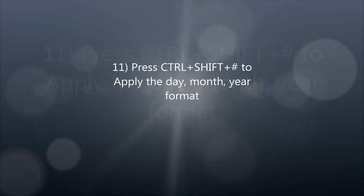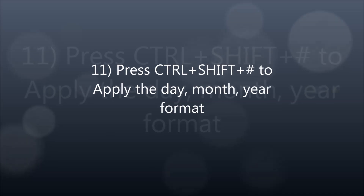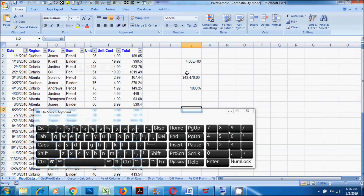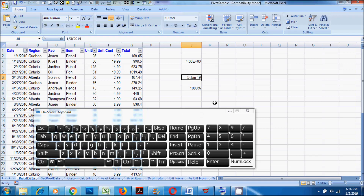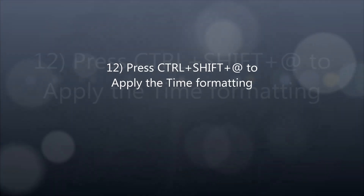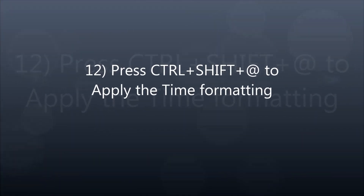10. Press CTRL plus SHIFT plus hash to apply the date, month, year format. 11. Press CTRL plus SHIFT plus at-sign to apply the time formatting.